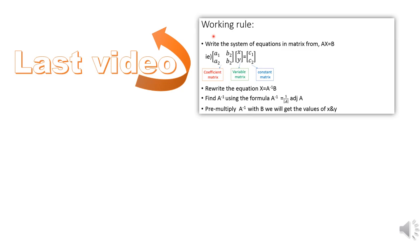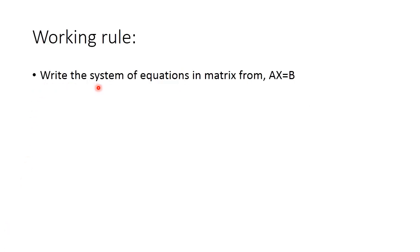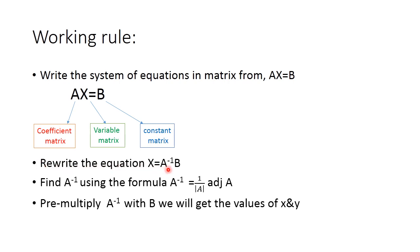In the last video I explained how to find the solution of a given system of linear equations using the matrix inversion method. Let me recall these steps. The first step is to write the system of equations in matrix form AX = B, where A is the coefficient matrix, X is the variable matrix, and B is the constant matrix. After writing AX = B, you rewrite it as X = A inverse times B. Next, find A inverse using the formula: A inverse = (1 / det A) times adjoint A. After finding A inverse, pre-multiply it with B to get the solutions for X and Y.